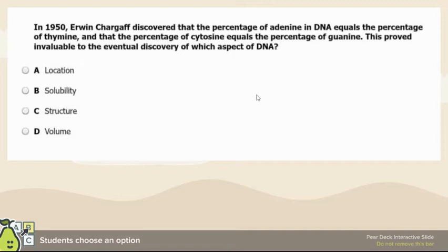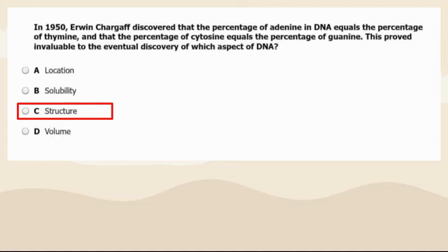For the percentage of adenine in DNA — adenine goes to thymine, cytosine to guanine. Chargaff's rules: A to T, C to G. This is invaluable to the discovery of the structure of DNA, because those nitrogenous bases are what hold DNA together. Anytime you see Chargaff's rules, think structure of DNA.